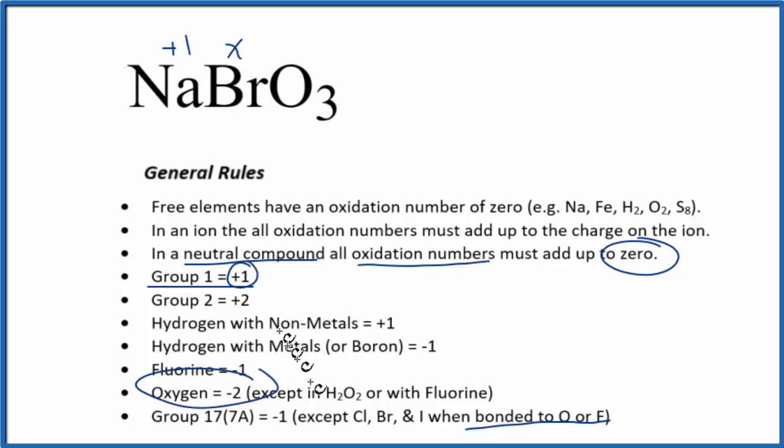Oxygen, that's going to be minus two, with a few exceptions, so we have minus two. And remember, all of this will add up to zero, so we can make an equation to figure out what bromine is in NaBrO3.